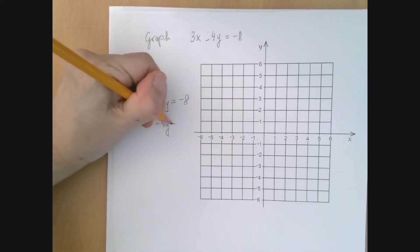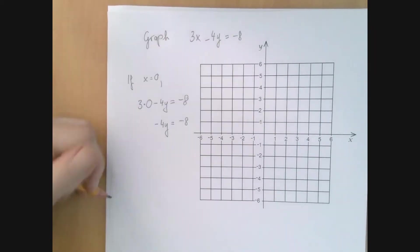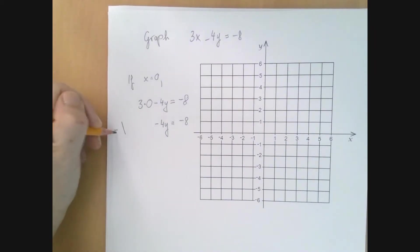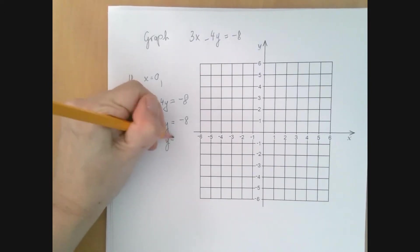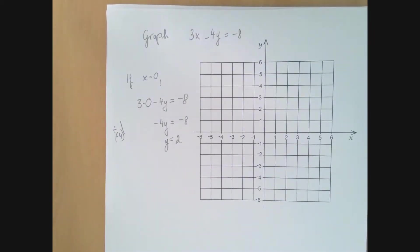which is the same as minus 4y equals negative 8. And now we're just going to divide by negative 4, so y equals 2. So what we found is the point (0, 2).